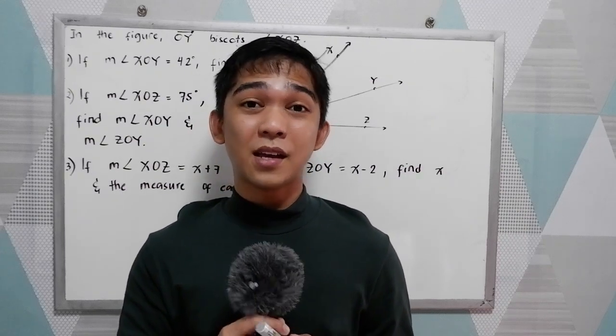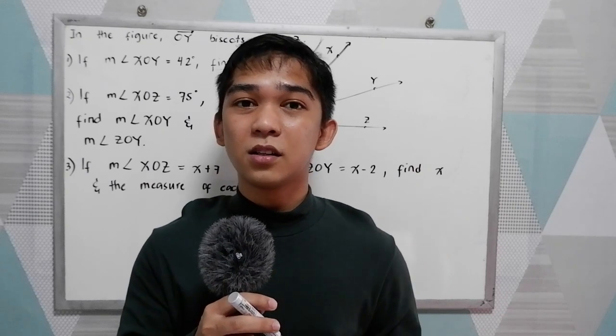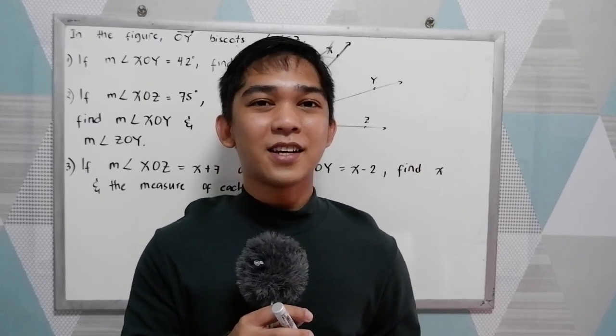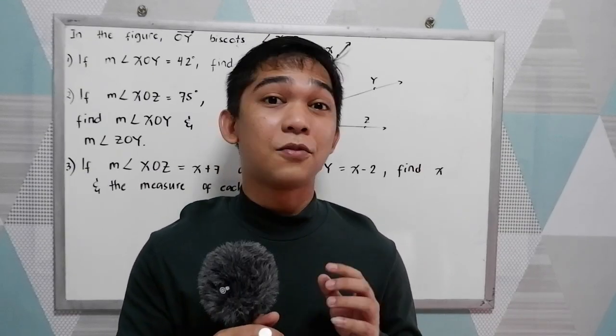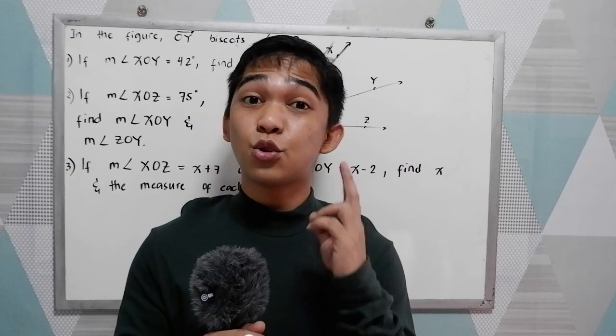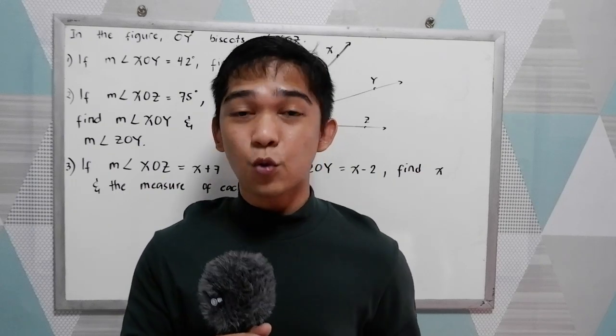And when we say angle bisector, it is a line that divides the angle into two congruent or equal parts.